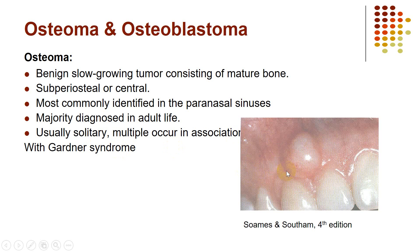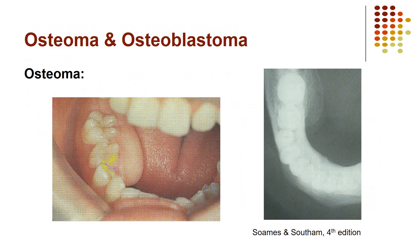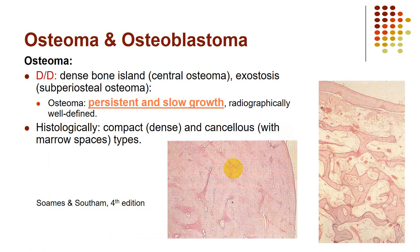When multiple lesions of the same type occur, we usually think about syndromes. Multiple osteomas occur in a syndrome called Gardner syndrome — which we also encountered when discussing multiple supernumerary teeth. Osteomas can start from within the bone itself and cause expansion and swelling of the mandible. They can appear radiolucent if the bone formed is of the cancellous type, or more radiopaque if composed of compact bone with relatively few marrow spaces.